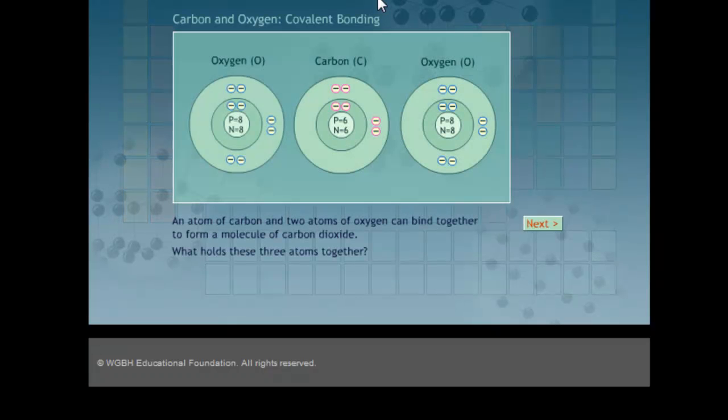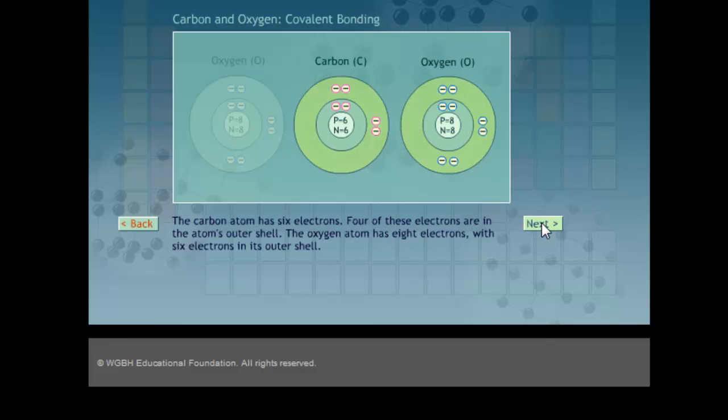On the other hand, take a look at a covalent bond. Kind of the same situation here where you have atoms that want to either gain or lose electrons. In this case, you have two oxygen atoms and a carbon. The carbon can either pick up four more electrons or it could lose those four electrons. Either way, oxygen wants two more electrons on both sides. It's got six. It just needs two more.